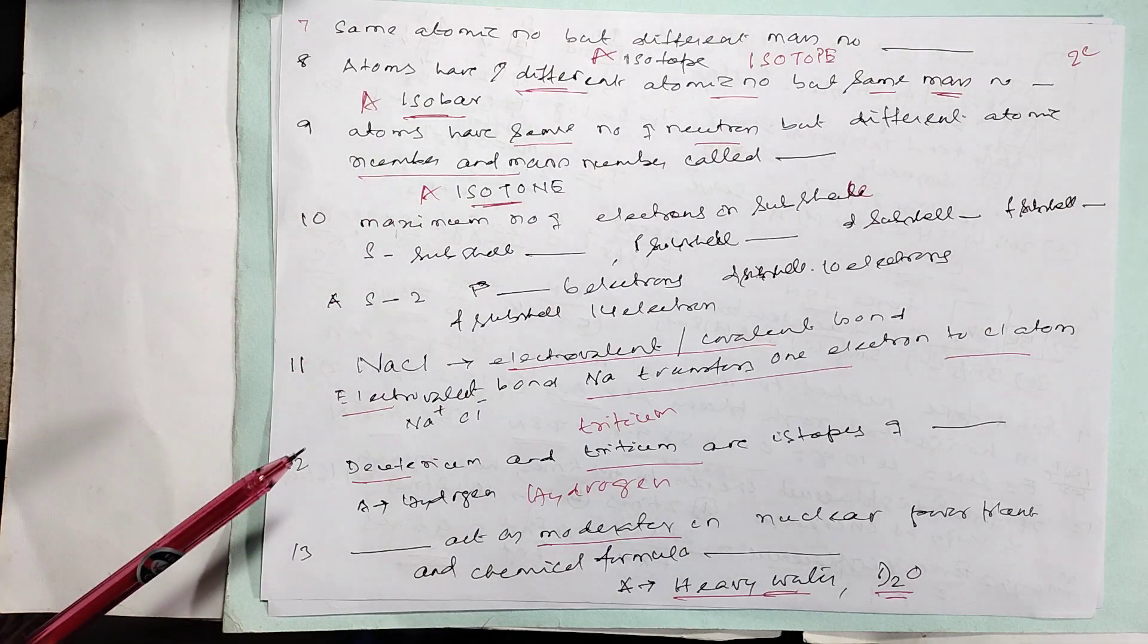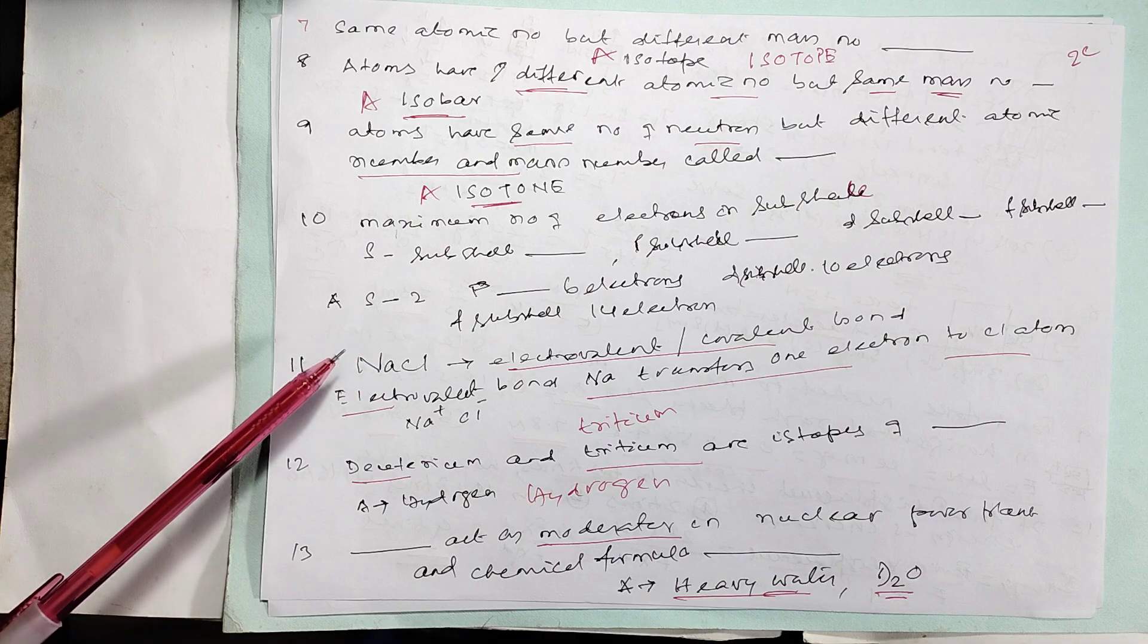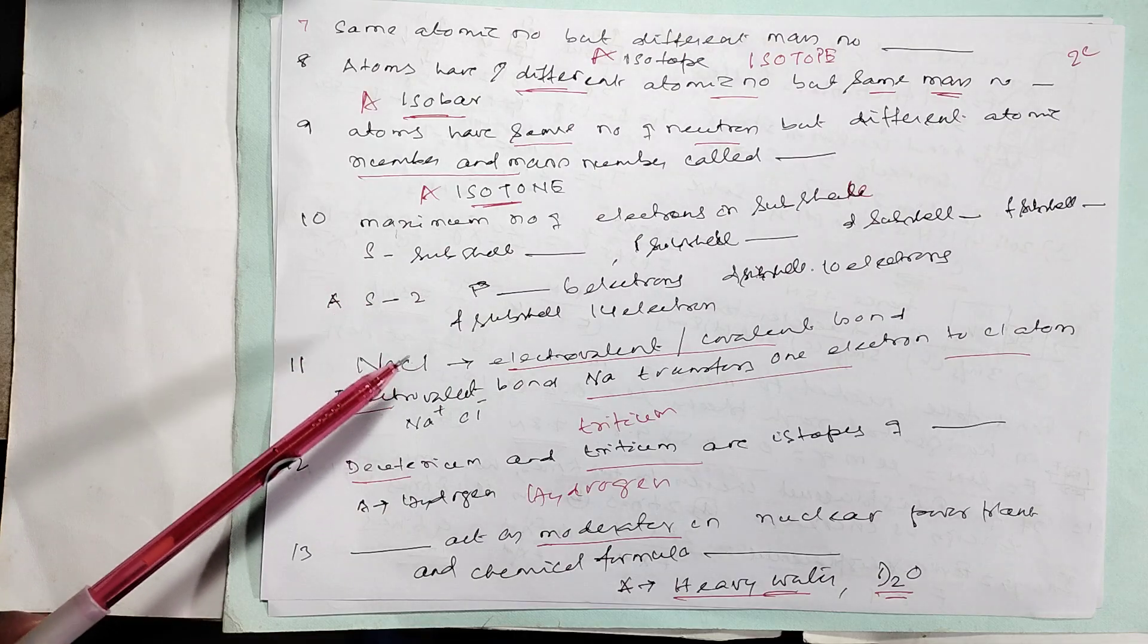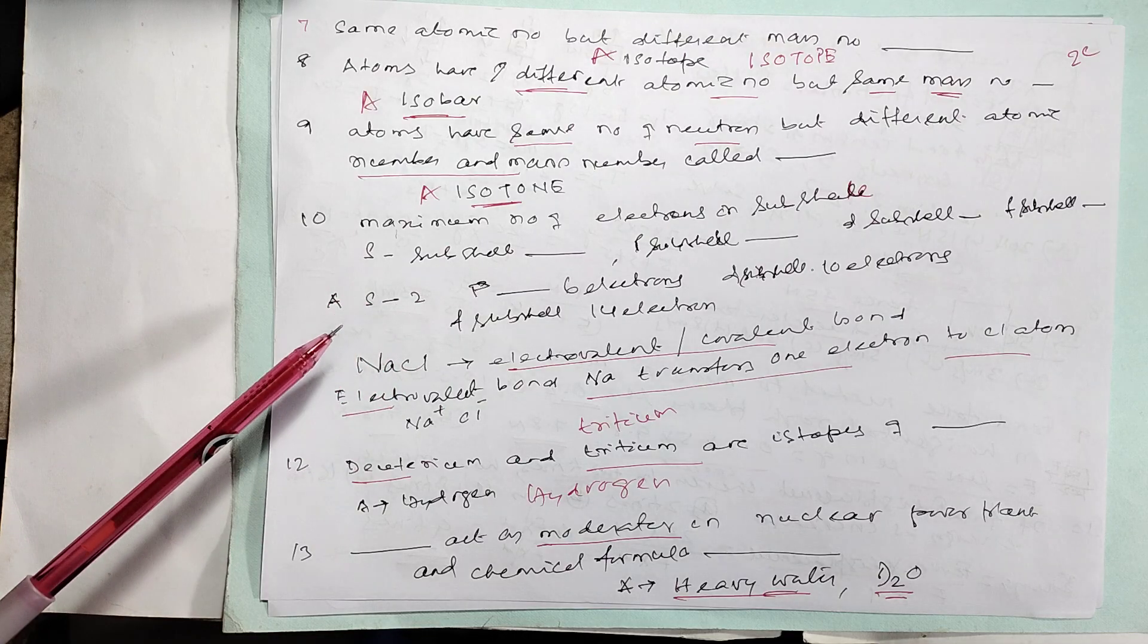For sodium chloride: sodium has 1 extra electron (positive), chloride has 1 electron shortage (negative). So it forms an electrovalent bond.